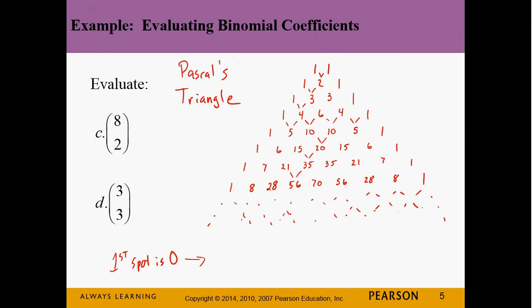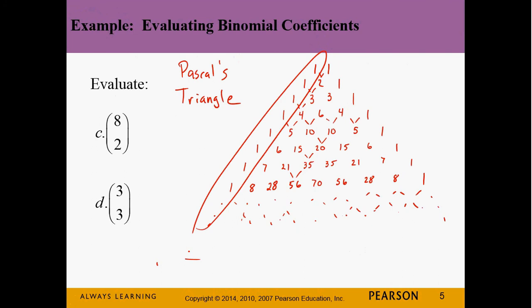For C(3,3), you go to the third row, position 3 — that's 1. Because anything above zero is always 1, and anything above itself is always 1.